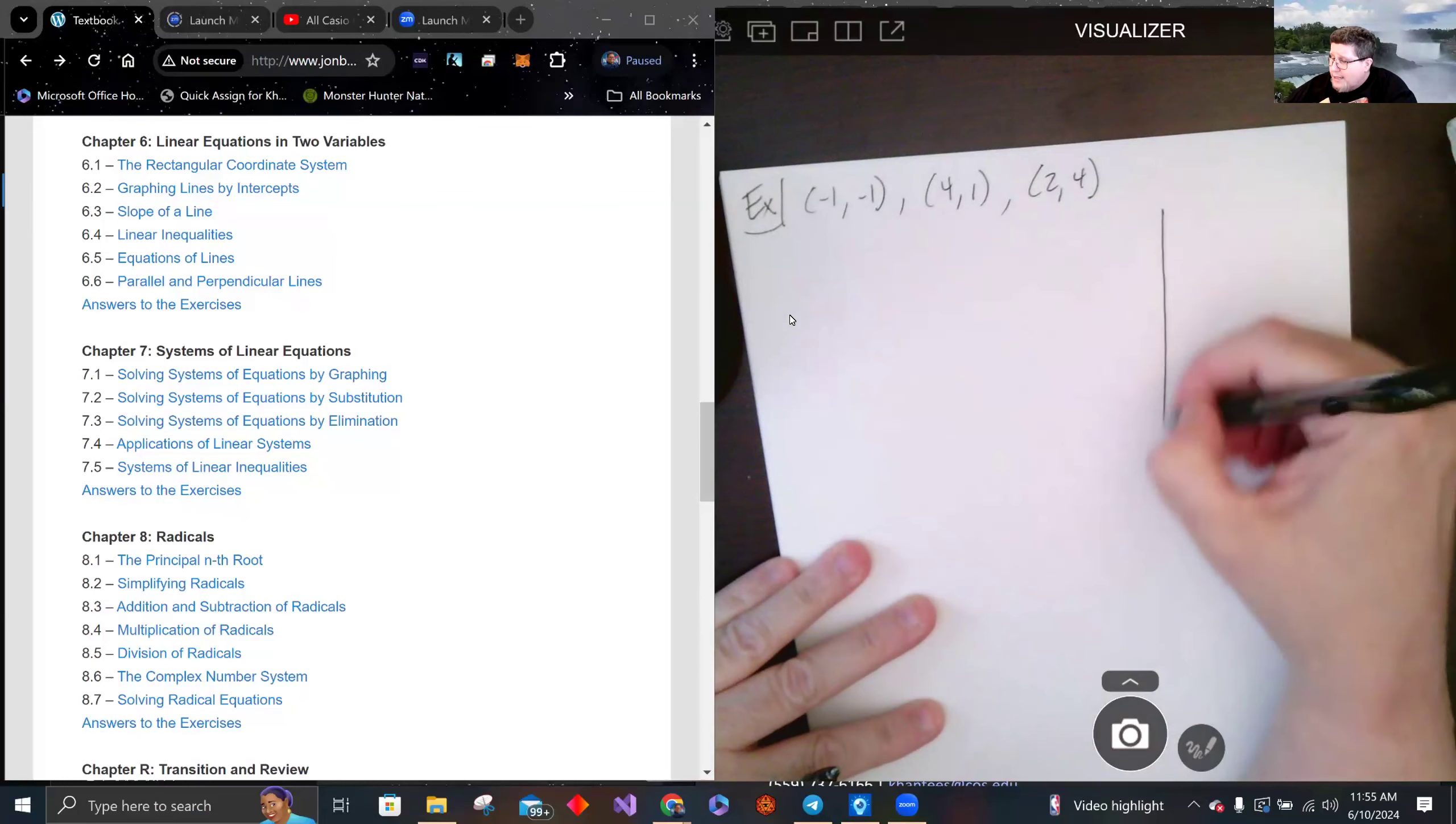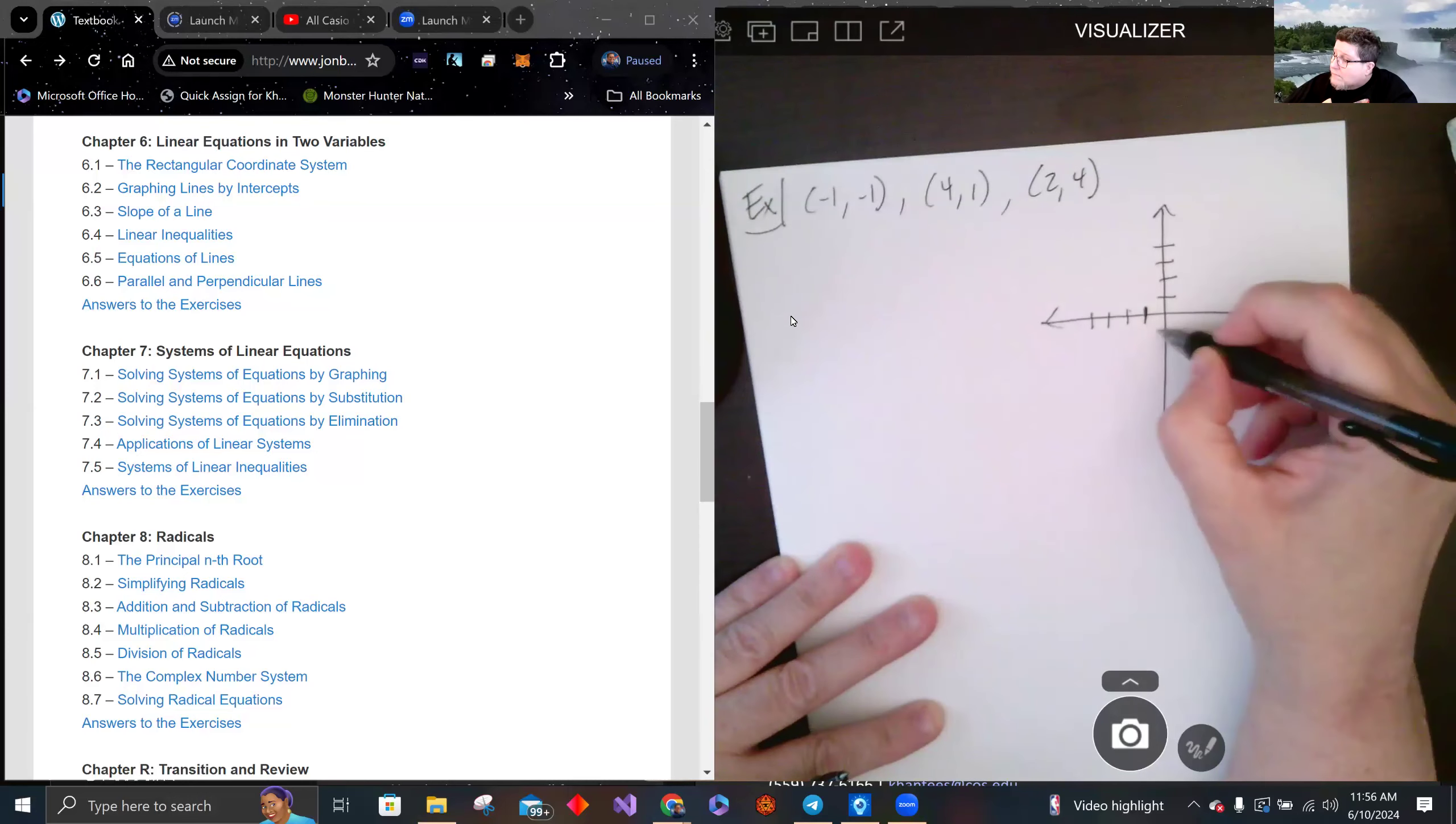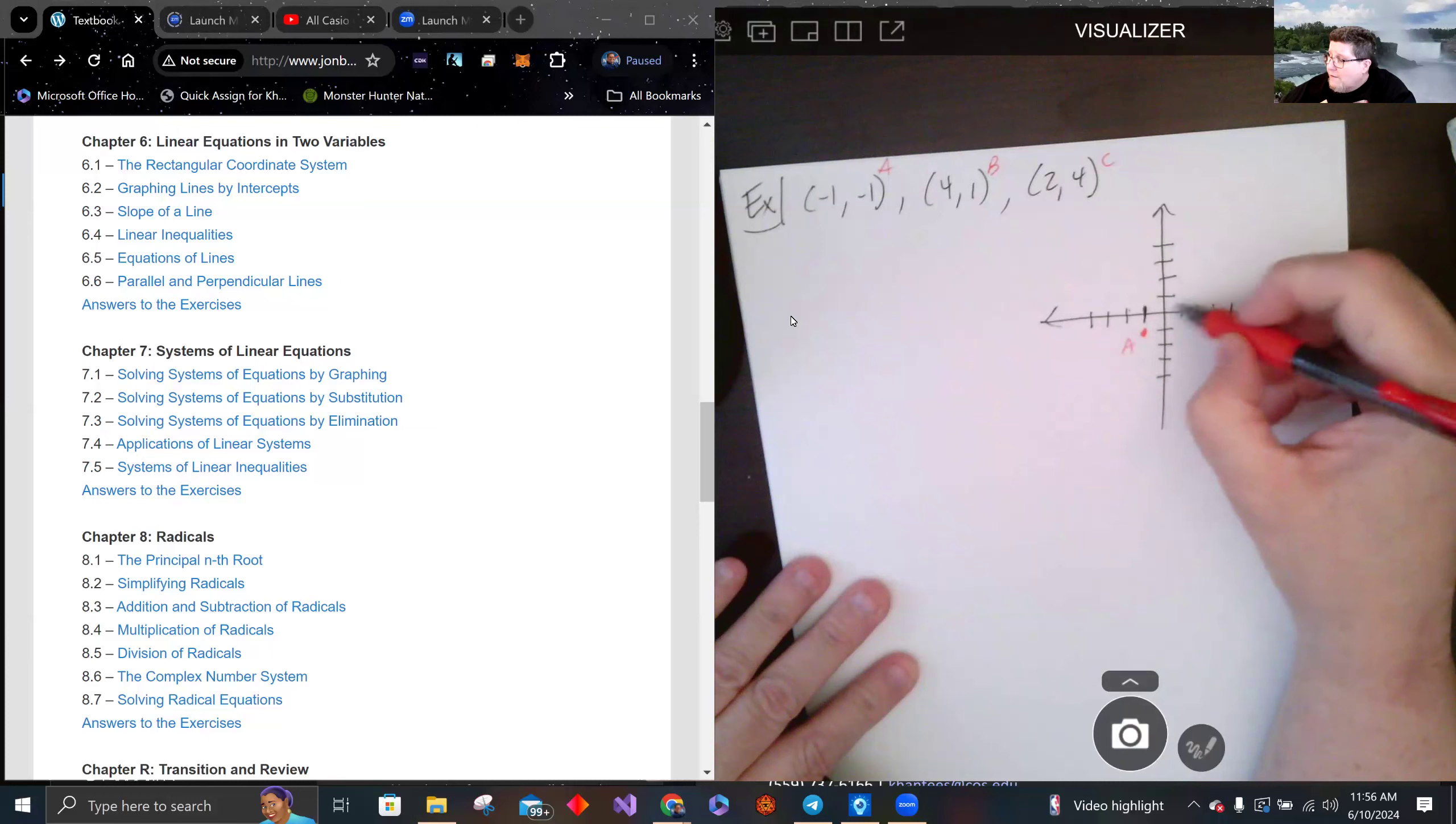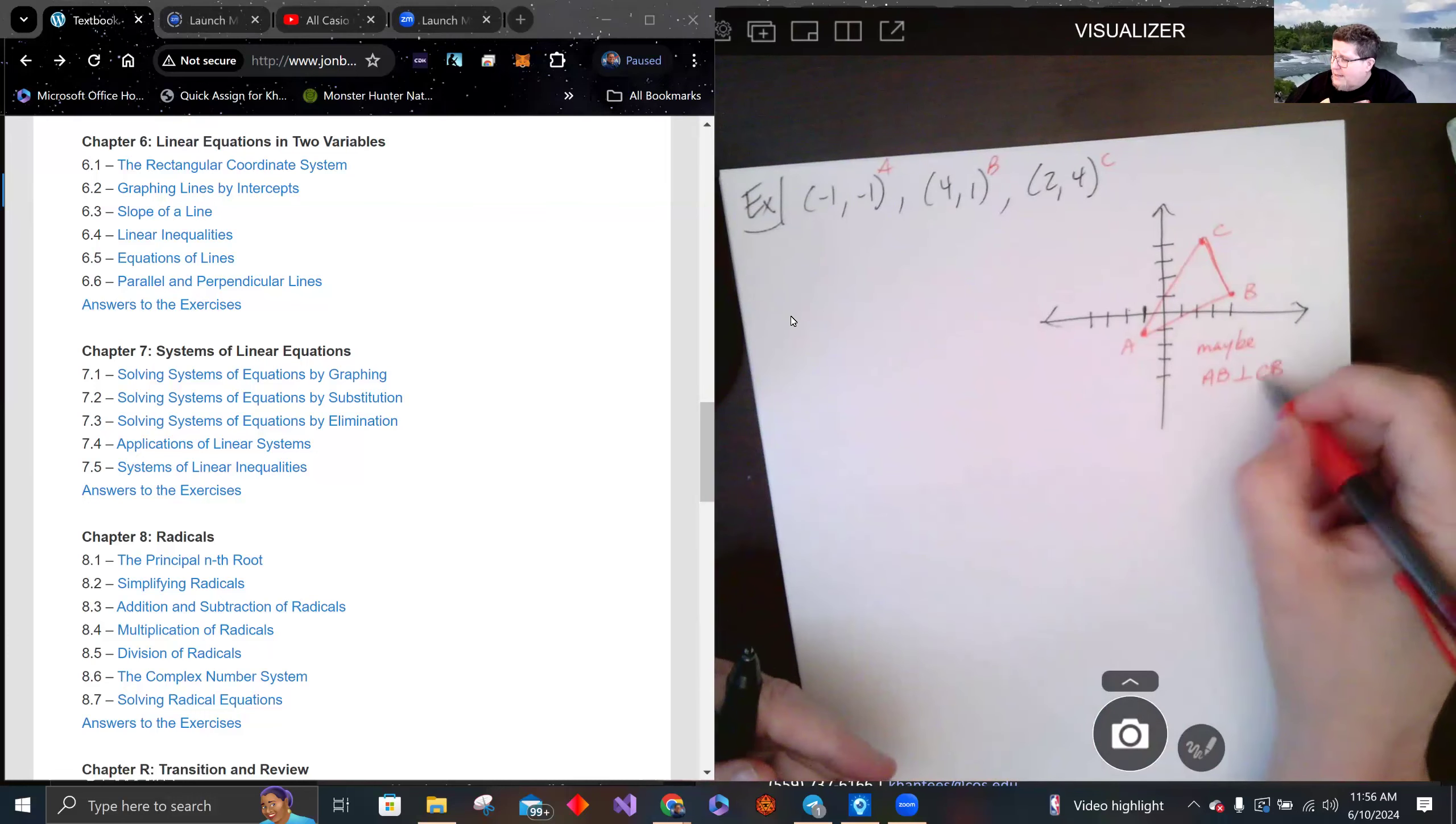All right, I'm going to assume you tried. Let's just sketch it to see what it looks like. So A, B, C: (-1,-1) is here, (4,1) is here, (2,4) is up there. So maybe AB is perpendicular to BC. Those might be perpendicular, or CB is the same as BC.